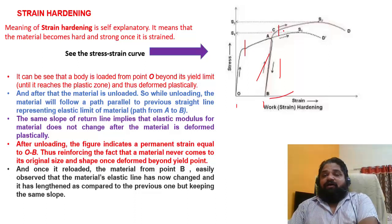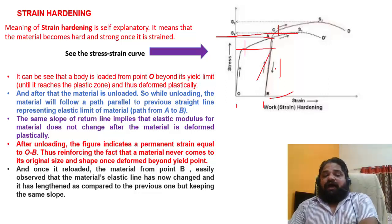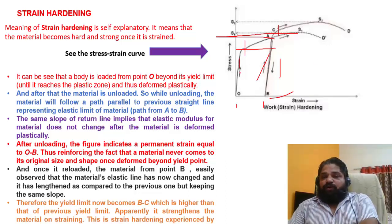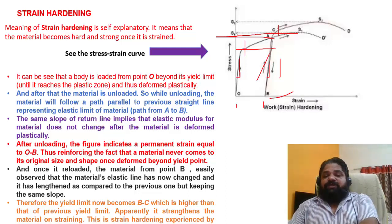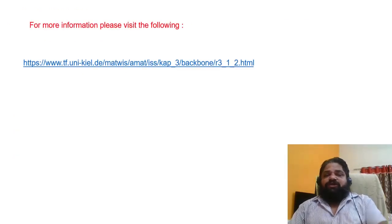Once reloaded from point B, it can be observed that the material's elastic line has now lengthened compared to the previous one, but keeping the same slope. The yield limit now becomes B to C, which is higher than the previous yield limit. This apparently strengthens the material on straining — this is the strain hardening experienced by metallic materials. I have given a link for more details about strain hardening and stress-strain relations. Thank you.